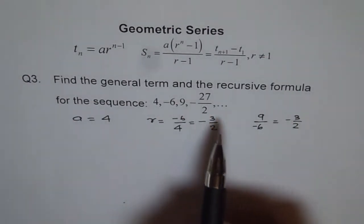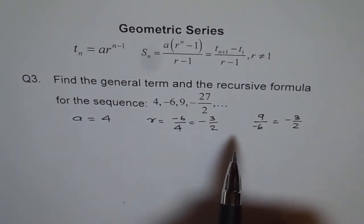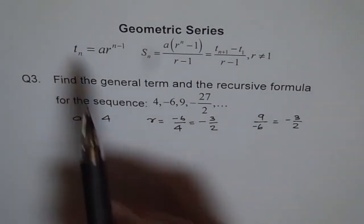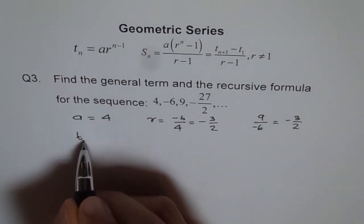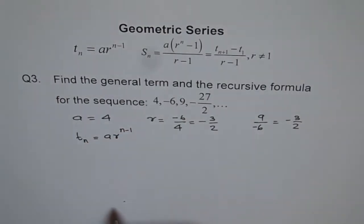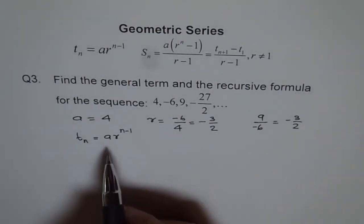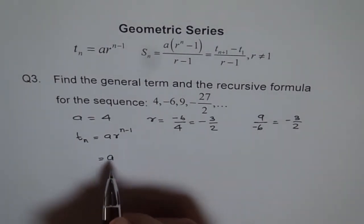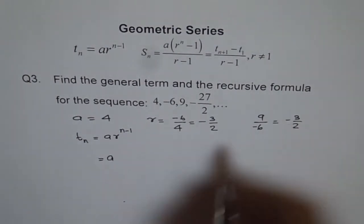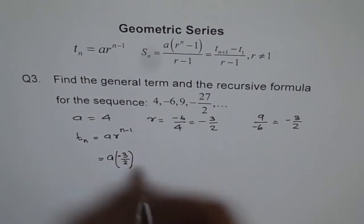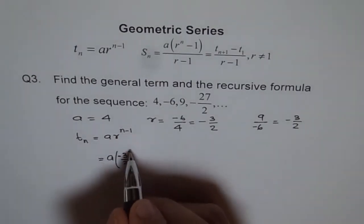So these four terms are in geometric sequence and so we can use a geometric sequence formula which is TN equals AR to the power of N minus 1 to find the general term. So here A is equal to 4, R is equal to minus 3 over 2 to the power of N minus 1.